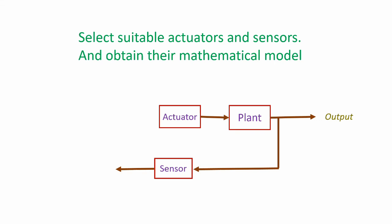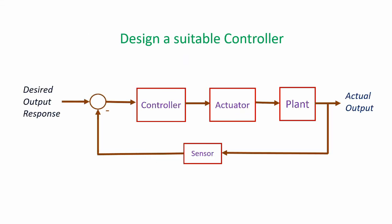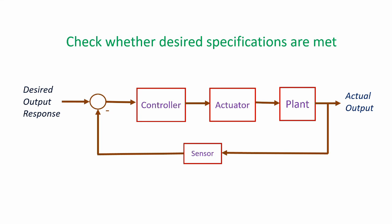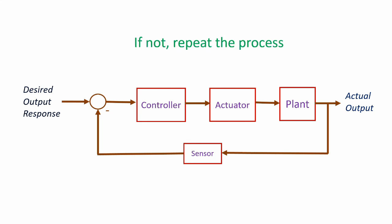After that, we need to decide on a suitable controller best suited for the application. After designing the controller, we need to either conduct experiments or simulations to check whether the desired specifications are met. If the desired specifications are not met, then we have to repeat the process.